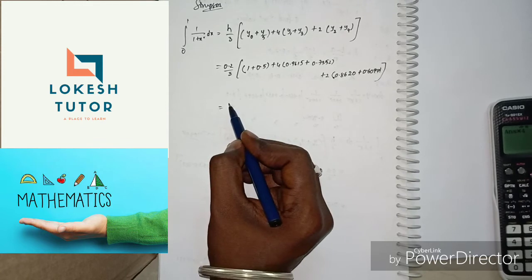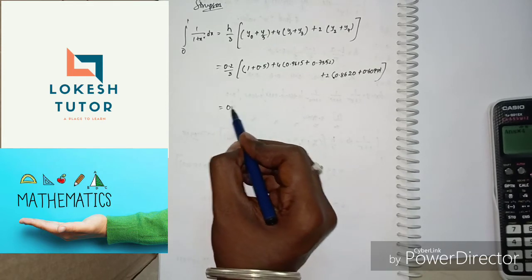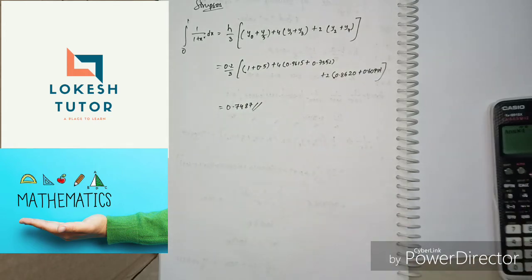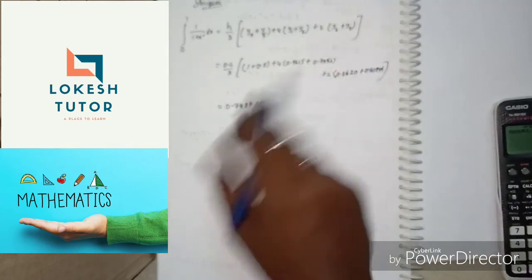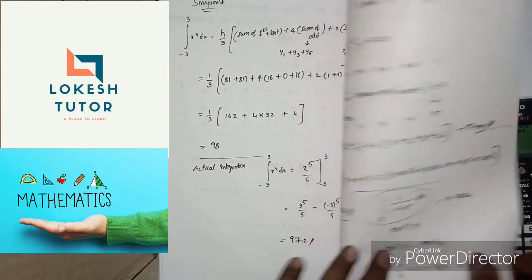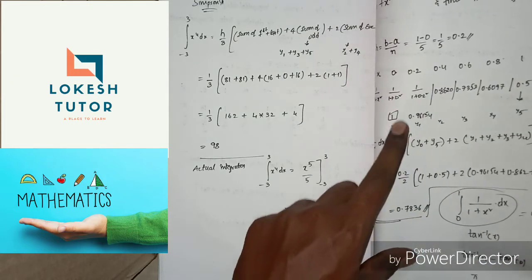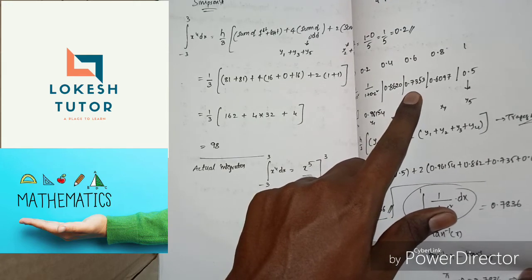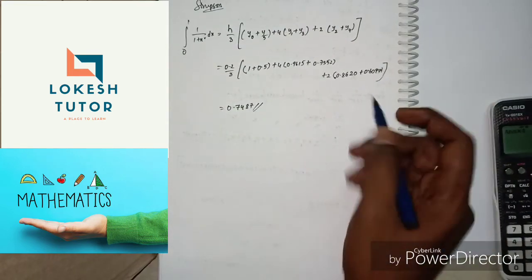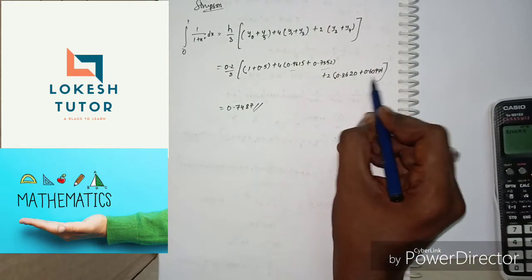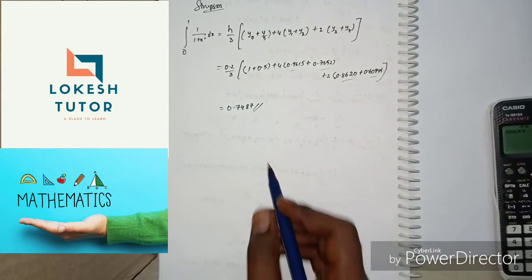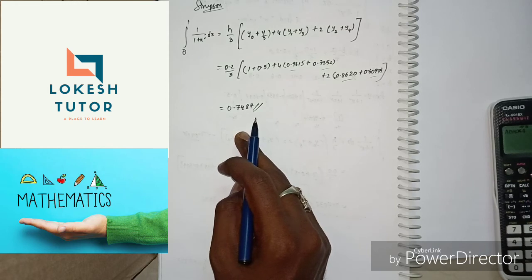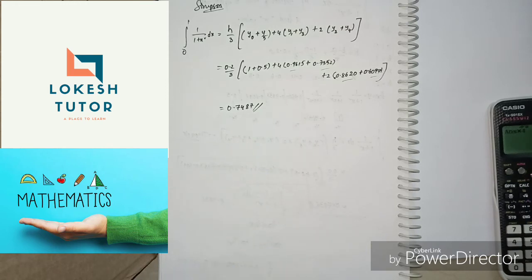The answer from Simpson's rule is 0.7854. So to summarize: the y values used were y0=1, y1=0.96154, y2=0.8620, y3=0.7353, y4=0.6097, y5=0.5. The Trapezoidal rule gives 0.7836, Simpson's rule gives 0.7854, and the actual integration value also gives 0.7854. We have now solved numerical integration using Trapezoidal, Simpson's, and actual integration methods.